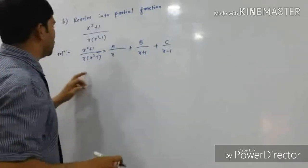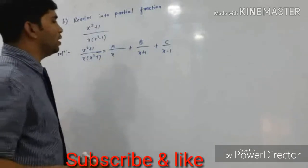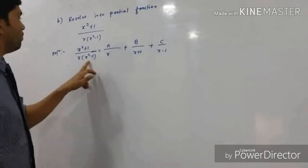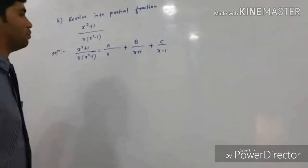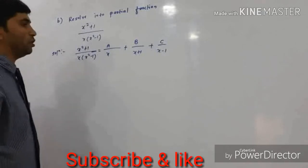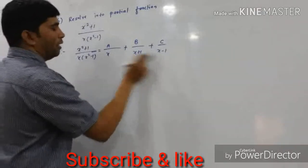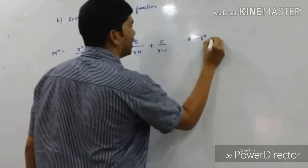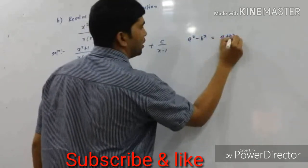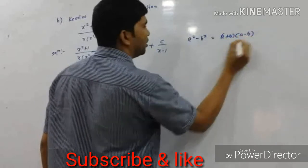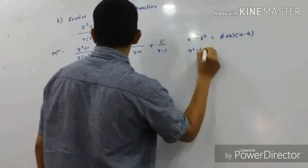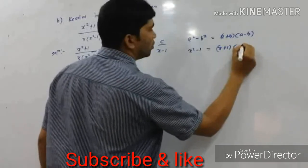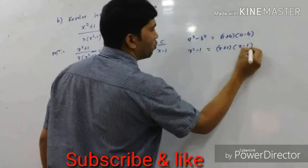Here, x² - 1 factors as (x+1)(x-1), because a² - b² = (a+b)(a-b). So x² - 1 = (x+1)(x-1).